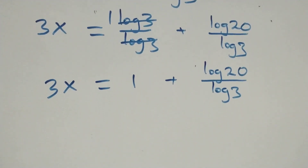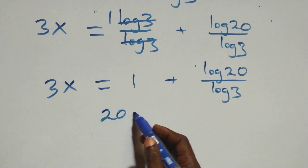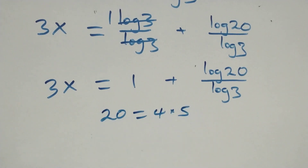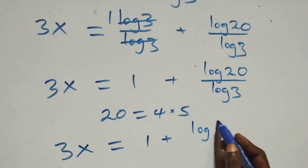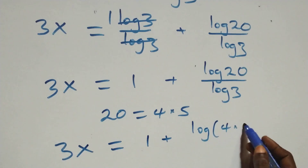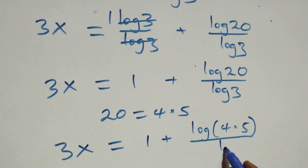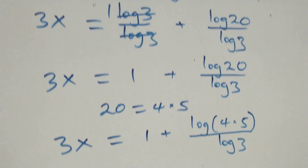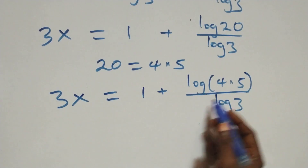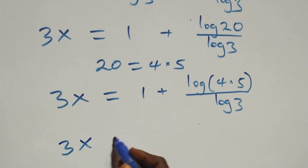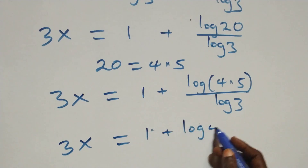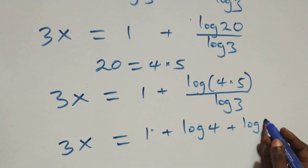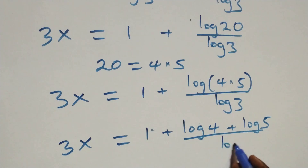Also, twenty can be written as four times five. So what we have becomes three x equals one plus log of four times five over log three. Applying the product rule of logarithms again, this becomes three x equals one plus log four plus log five, all over log three.